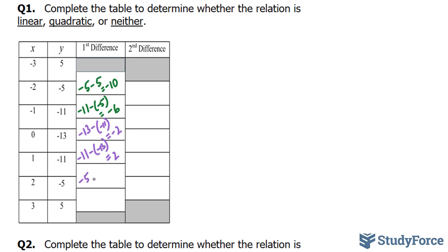Minus 5 minus negative 11, negative 5 plus 11 is equal to positive 6. And finally, 5 minus negative 5 is equal to 10. Now we've concluded that this is not linear.